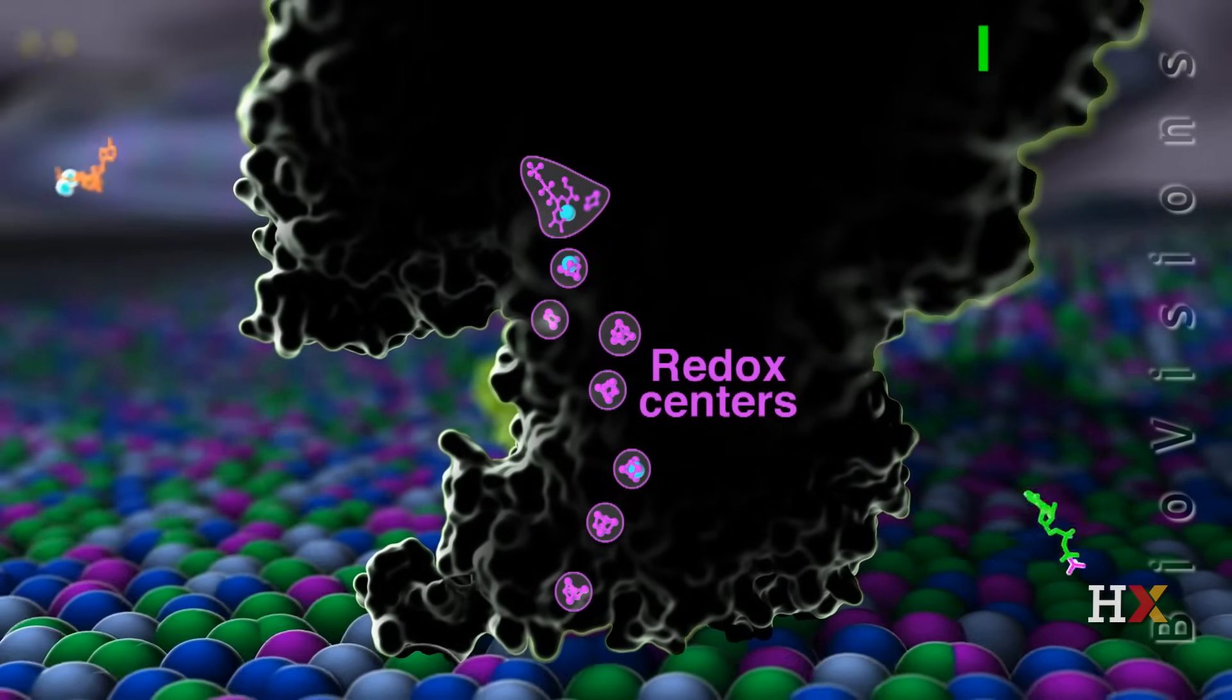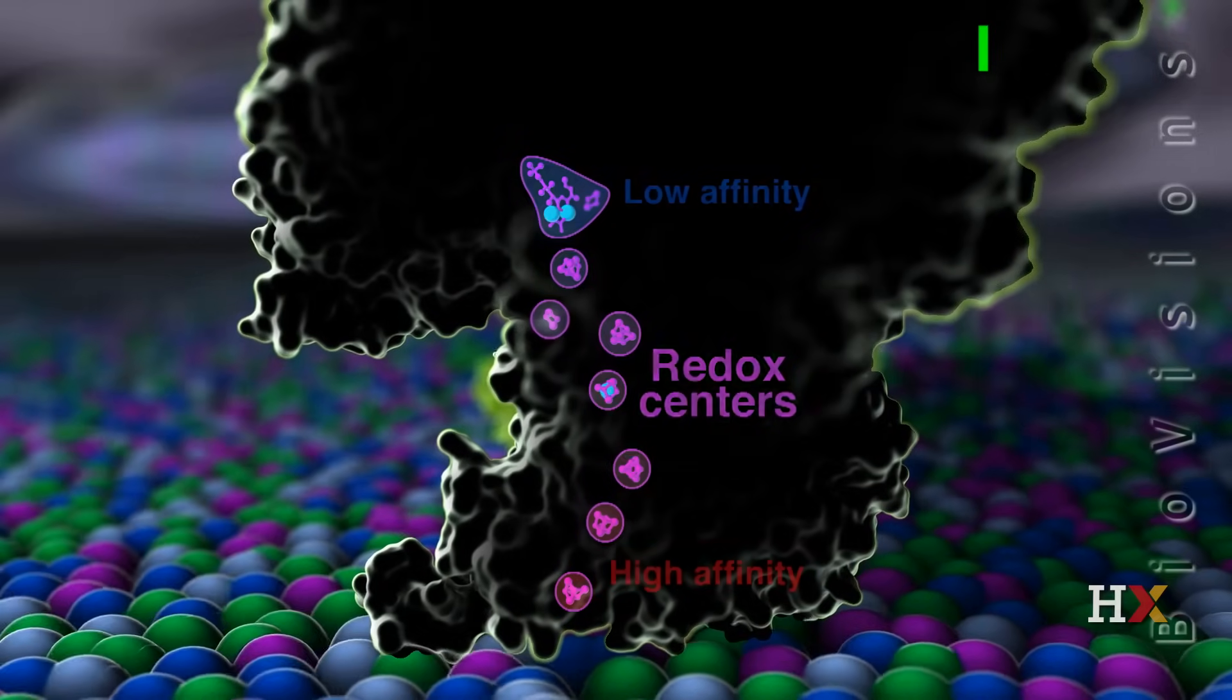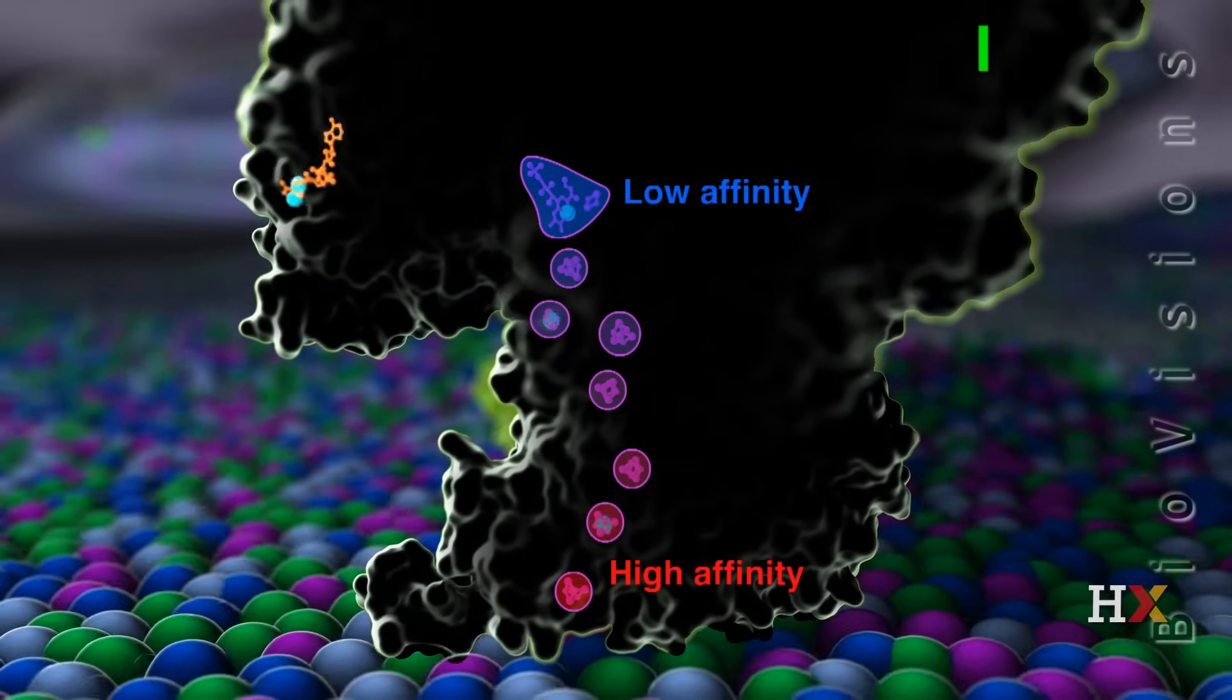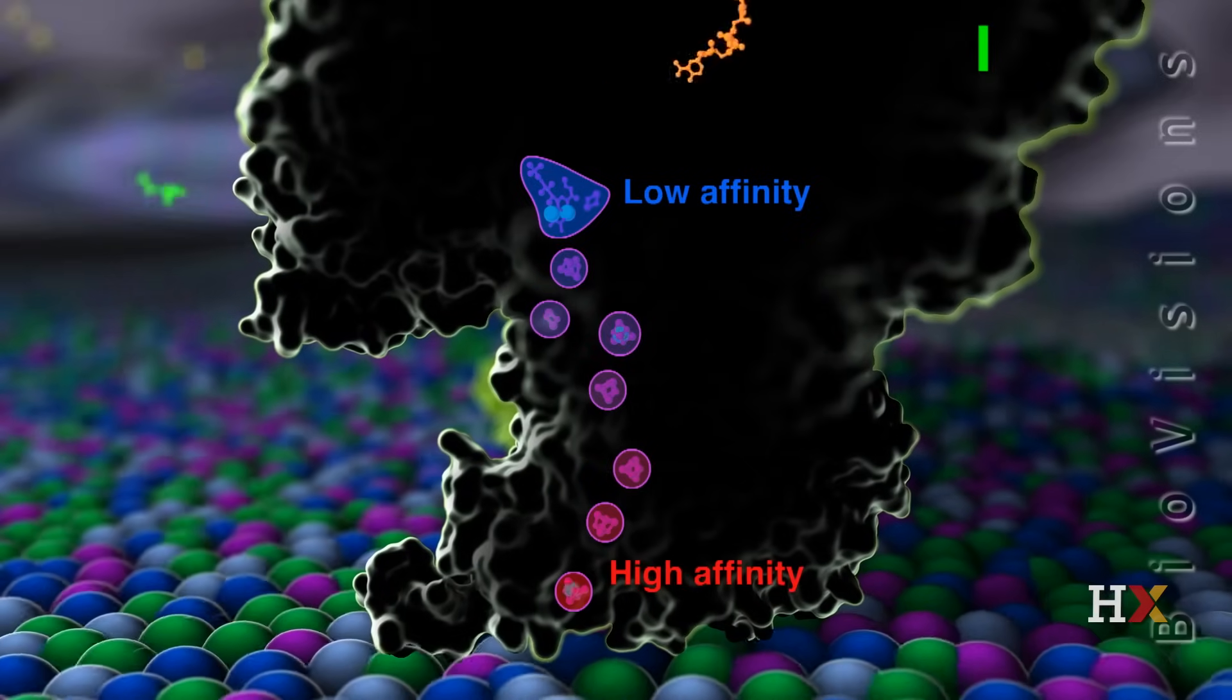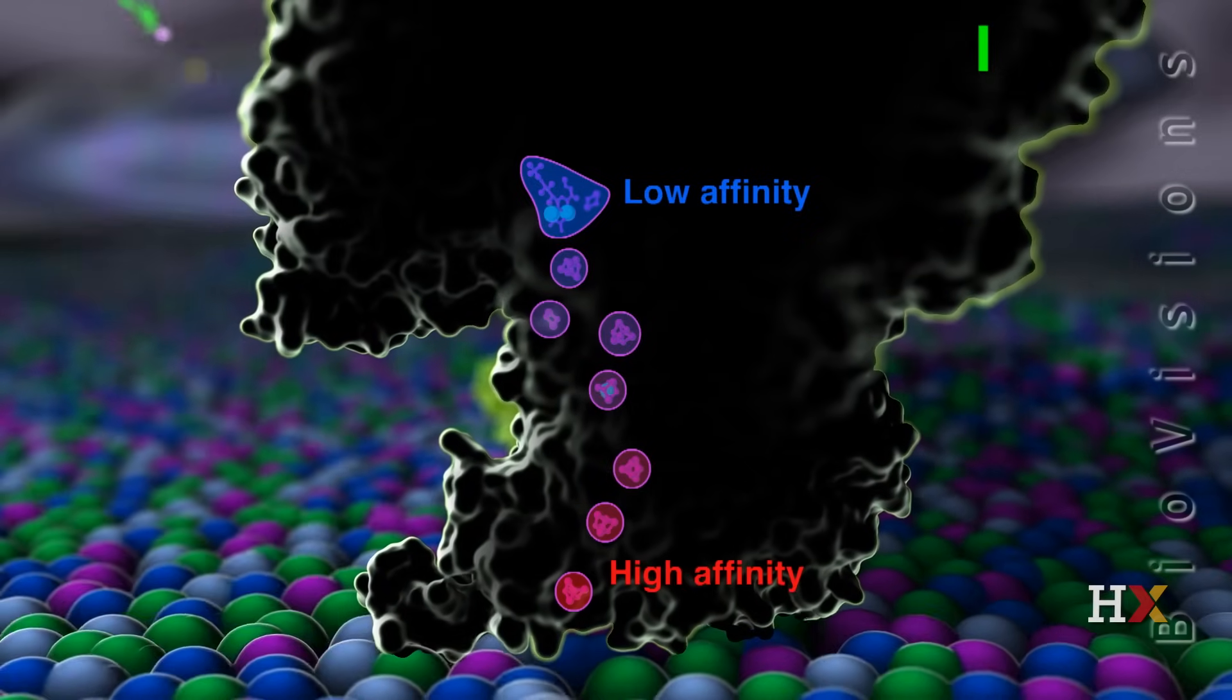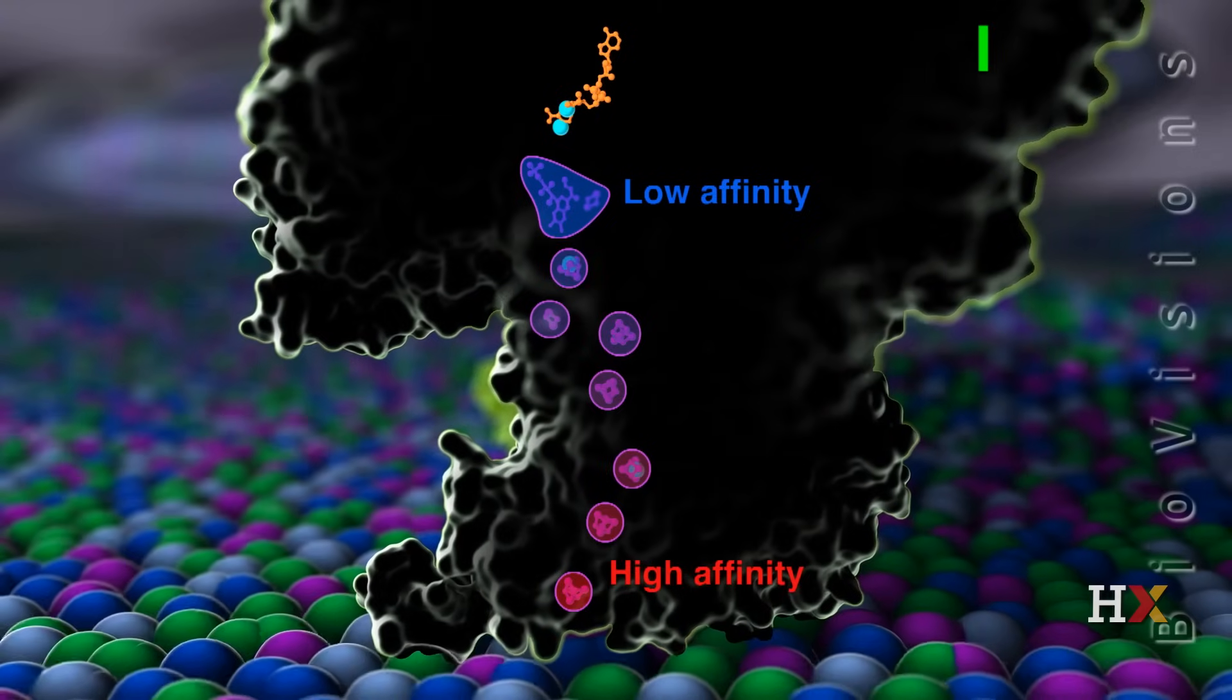Redox centers are clusters of atoms that have different affinities for electrons based on their unique atomic configurations. Let's closely consider a pair of redox centers to reveal two reasons why an electron moves from the top redox center to the bottom.